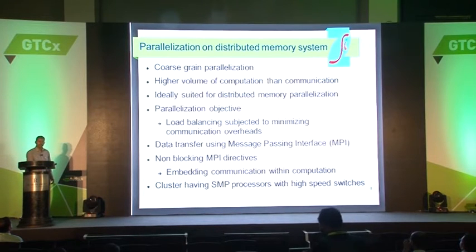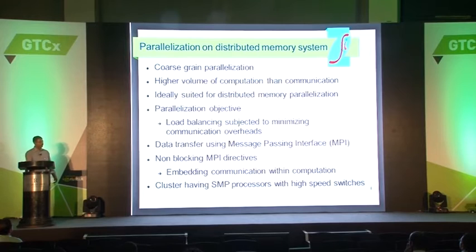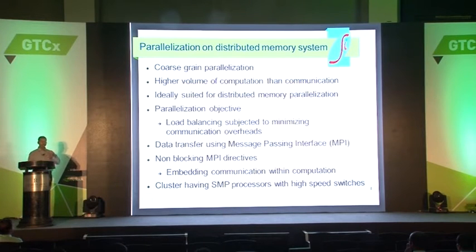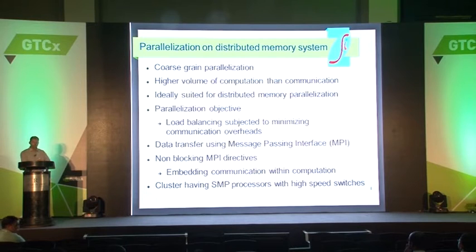Typically in CFD, the parallelization happens on the distributed memory system, essentially because CFD algorithms lend themselves to coarse-grained parallelization, in which the volume of computations is much higher compared to the data that needs to be communicated. This coarse-grained parallelization is ideally suited for distributed memory parallelization. The objective of parallelization in CFD algorithms is to balance the load — given the workload, you split it into a number of subdomains or partitions and assign these partitions to different processors so that the compute effort is approximately the same, while the communication across processors is minimum in order to reduce the associated overheads.